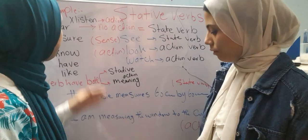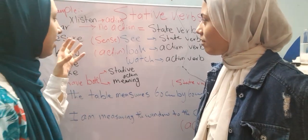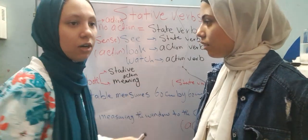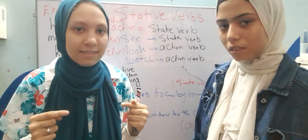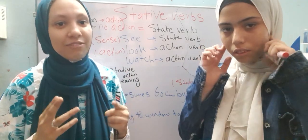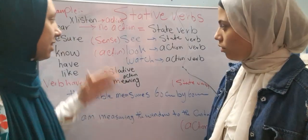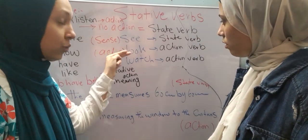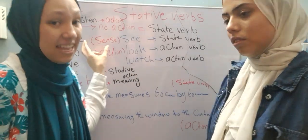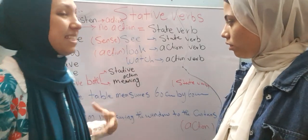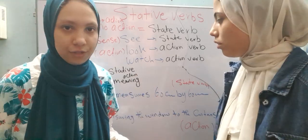Compare 'hear' with 'listen'. If you want to listen to me, you will listen. If you don't want to listen, you will tune out. The same rule applies to the verbs see, look, and watch. With 'see', there is a sense — it's a state verb. But 'look' and 'watch' are action verbs.